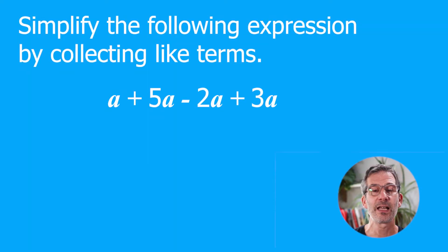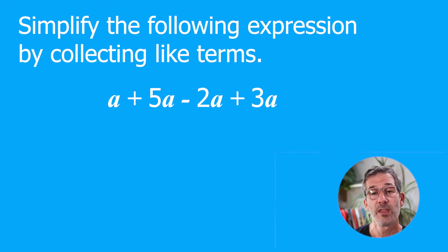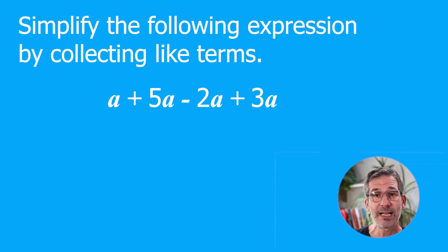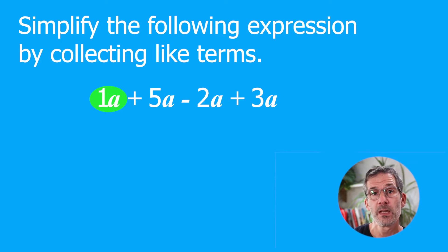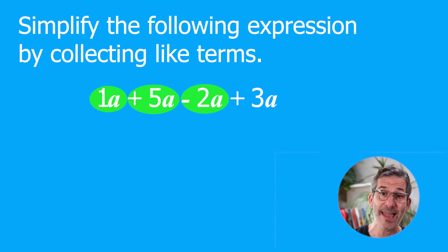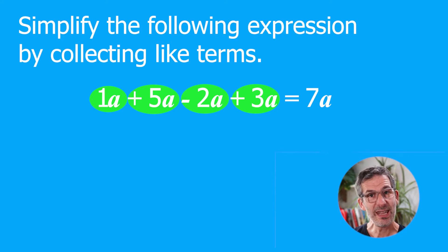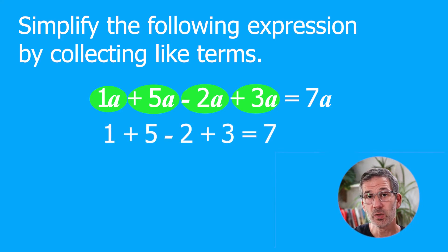Simplify A + 5A − 2A + 3A. All the terms contain only the letter A, so they are like terms and simplifying is straightforward — we just collect all the A's together. There's one A at the start (we don't write the 1, but it's there), then add 5A to get 6A, subtract 2A to get 4A, then add 3A to reach 7A. So the answer is 7A: that's 1 + 5 − 2 + 3.